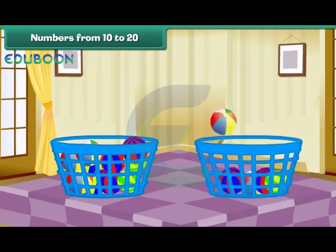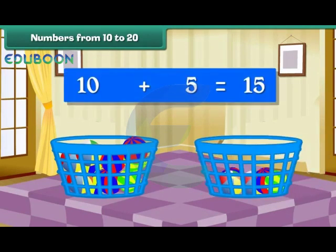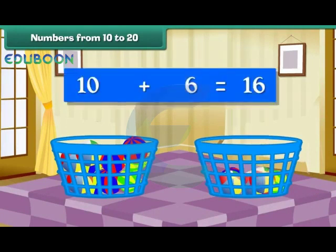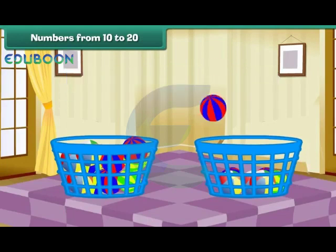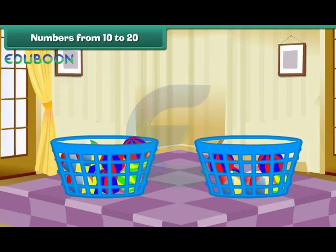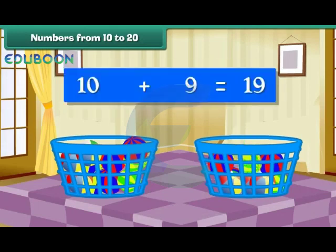Group of 10 plus 5 makes 15. Group of 10 plus 6 makes 16. Group of 10 plus 7 makes 17. Group of 10 plus 8 makes 18. Group of 10 plus 9 makes 19.